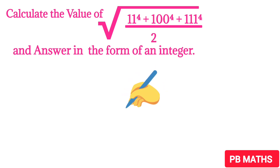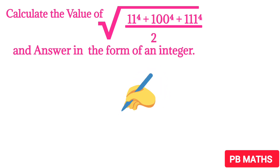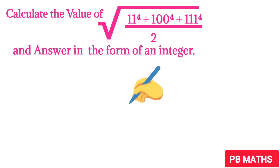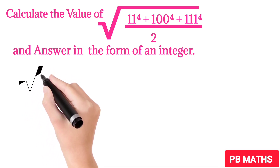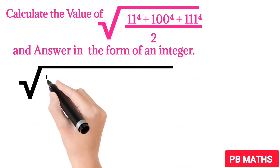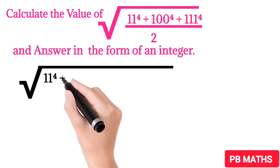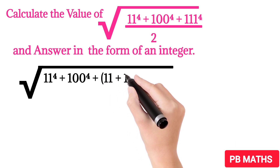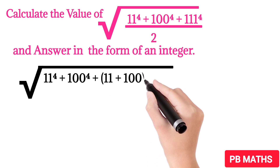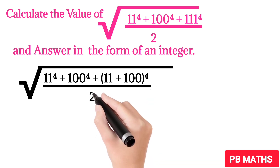It is said that the answer is in the form of an integer. It means that the expression inside the square root is a perfect square. So let's write that expression in the form of the square of a number. The numerator part which is under the square root can be written as 11 to the power 4 plus 100 to the power 4 plus 11 plus 100 to the power 4, whole divided by 2.